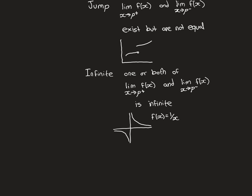The third type is called an infinite discontinuity. In this case, both one-sided limits exist; however, one or both of them is infinite — either positive or negative infinity. We expand our definition of the limit to include infinity. A classic example is the function 1/x at the point 0, where the left-hand limit goes to negative infinity and the right-hand limit goes to positive infinity.